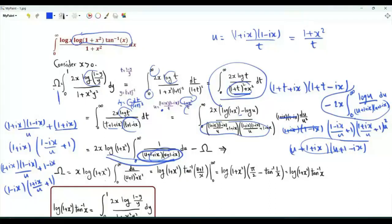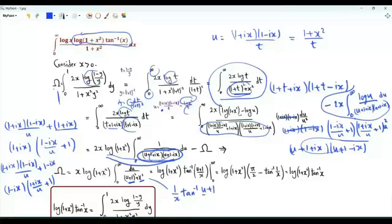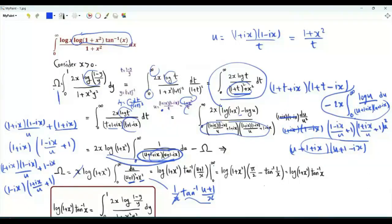So Ω equals x·log(1+x²) times the integral over positive u of 1 over (x²+(u+1)²). The antiderivative is (1/x)·arctan((u+1)/x). As u tends to infinity, this arctan tends to π/2; as u tends to 0, we get arctan(1/x).